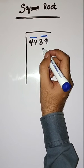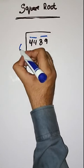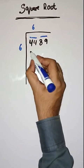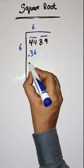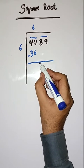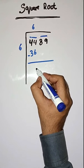So start dividing. First, we will take a number 6. 6 times 6 are 36, minus. 44 minus 36 is equal to 8.